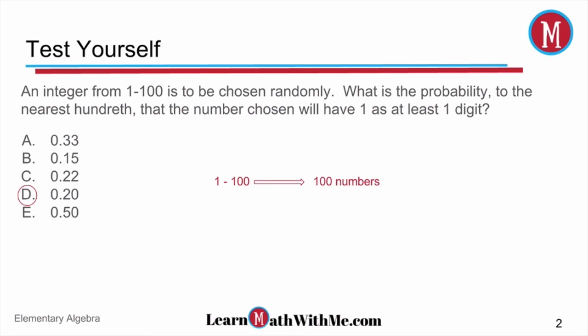Now what we need to do is think about what are those numbers that could have at least one digit of 1 within the set of 1 to 100. That would include 1 and 100, and then we've got 10, 11, 12, 13 — all the teen numbers. Then you have 21, 31, 41, all the way up to 91. That's a total of 20 numbers.